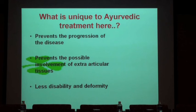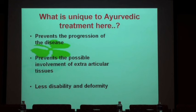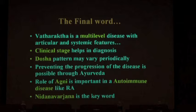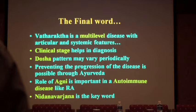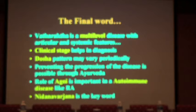You have to incorporate drugs from other spectrums because RA has multiple system involvement. Less disability and deformity — my area was to tell the diagnosis, and that is what I have done till now. The remaining treatment aspects will be highlighted by the next speaker. The final word: Vata Rakta is a multi-level disease with articular and systemic features, with multiple-level pathology.